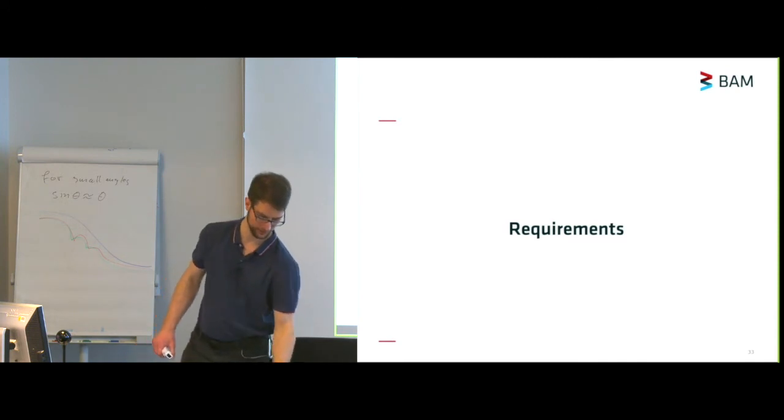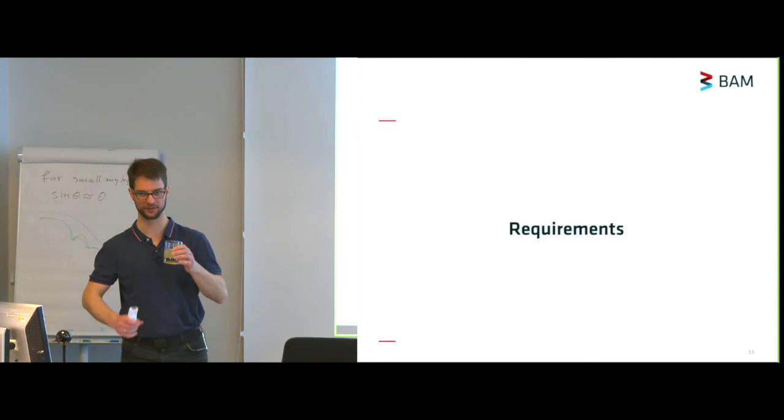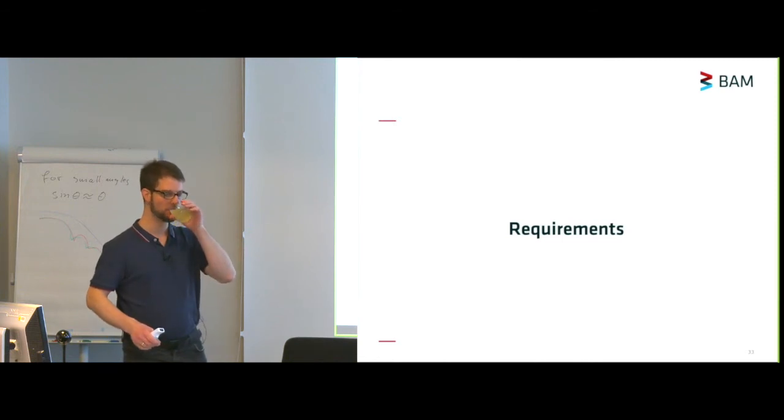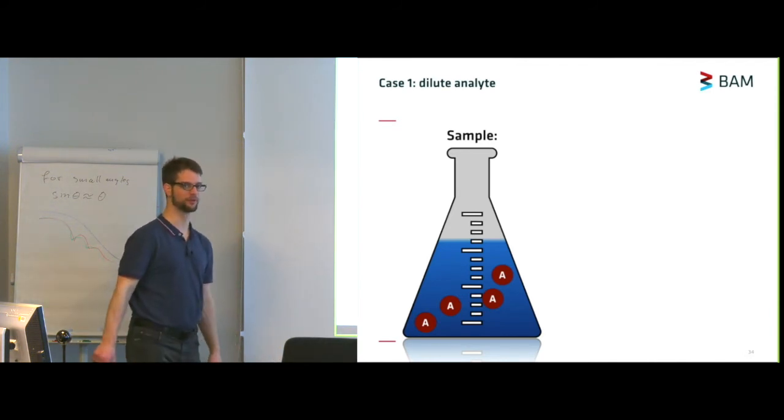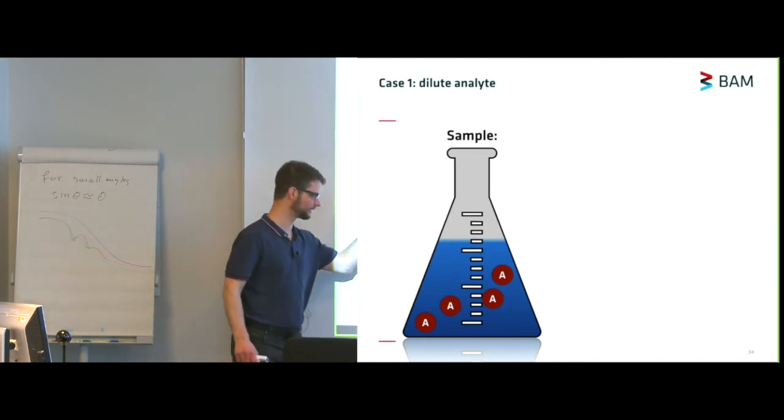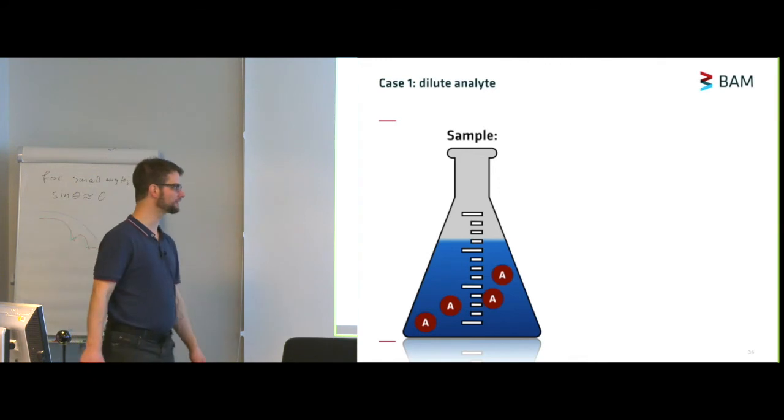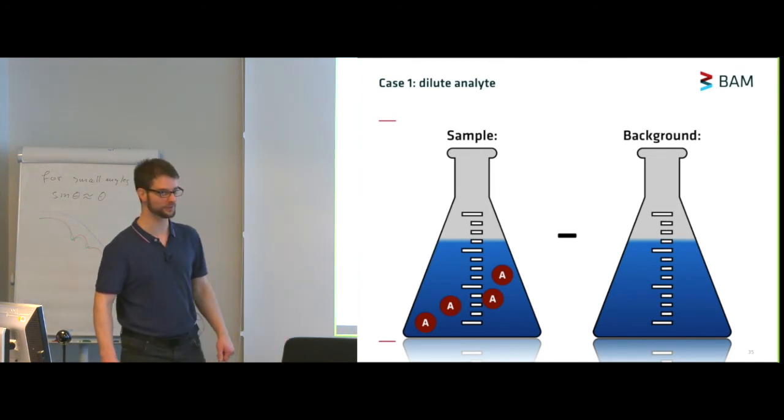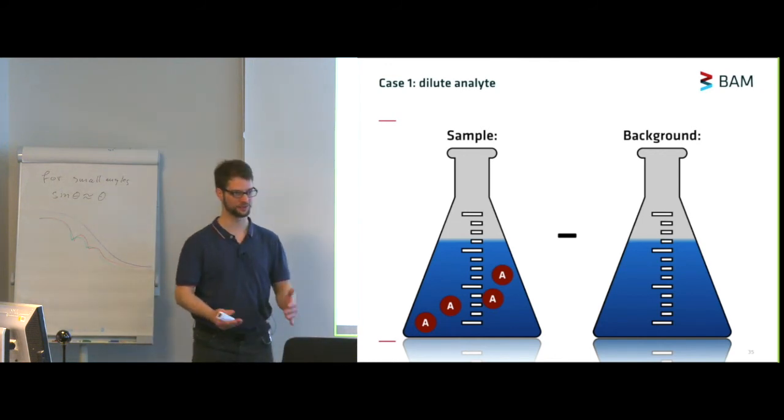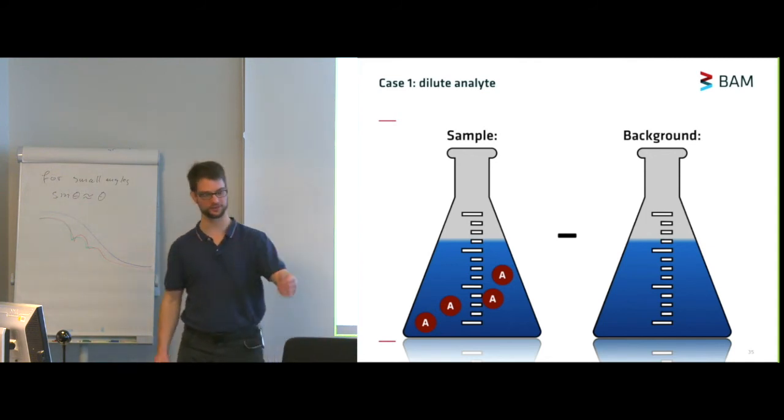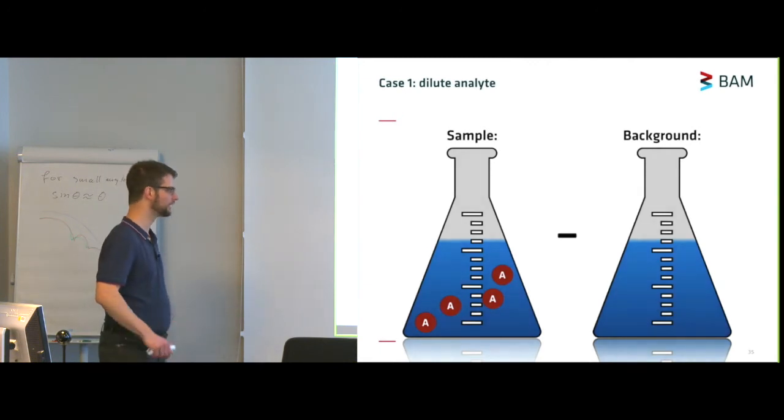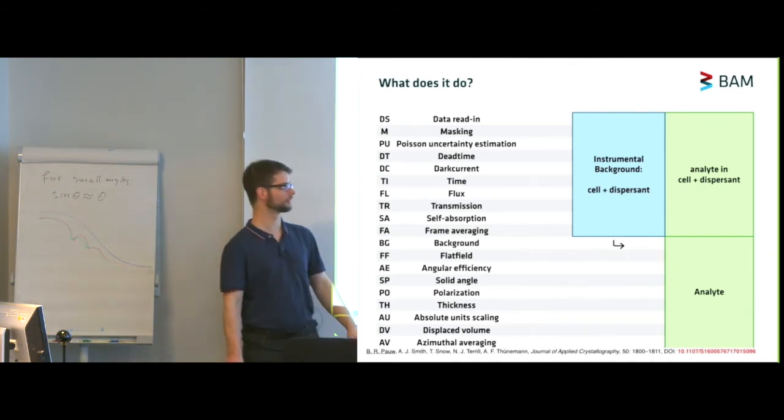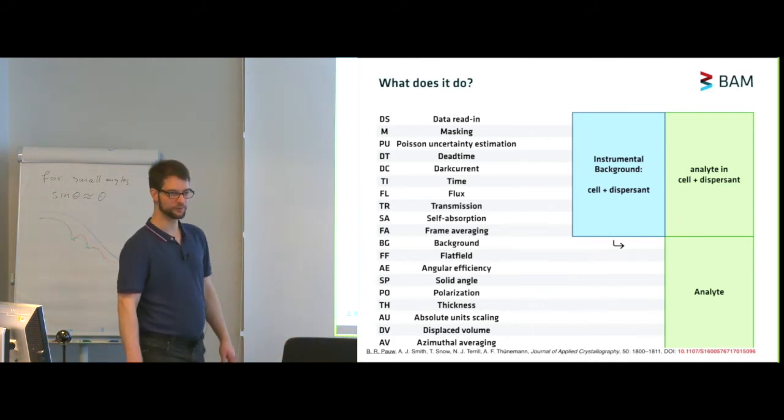So, for these data corrections to work, there are some requirements. First of all, you need to store all your metadata, but the second, and perhaps most important, step in getting well-corrected data is to select a correct background. And Tim already mentioned this a little bit. So, if you have a simple sample, a sample of dilute analyte in a particular solvent, what you would need to subtract is everything except the thing you're interested in. So, in this case, the solvent in its container, in the same container, ideally. So, we have flow-through containers, so that we can always subtract exactly the container plus solvent, compared to the container plus solvent plus analyte.